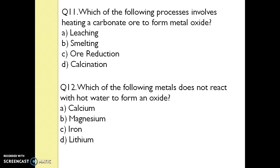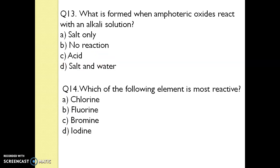Q11. Which of the following processes involves heating a carbonate ore to form metal oxides? The answer is Option D, calcination. Question 12. Which of the following metals does not react with hot water to form an oxide? The answer is iron. Question 13. What is formed when an amphoteric oxide reacts with an alkali solution? The answer is salt and water.